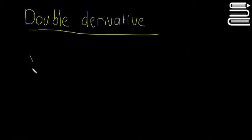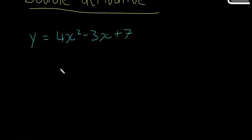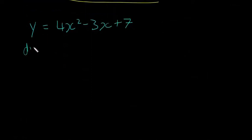So we'll start off just with a little example. We're going to say y is equal to 4x² minus 3x plus 7. So we know how to calculate dy dx.